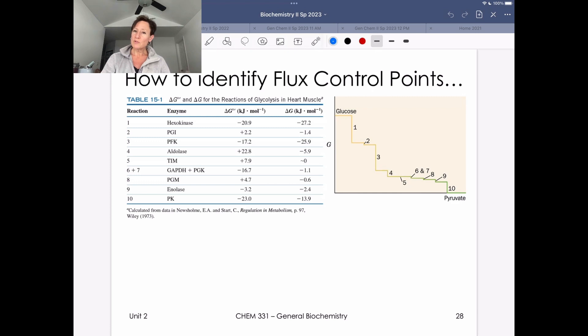Well, we've learned before that we can identify flux control points by looking for enzymes that are far equilibrium or control far equilibrium reactions.